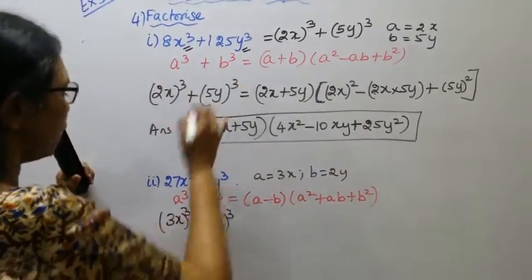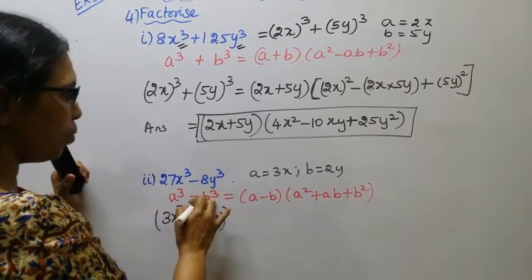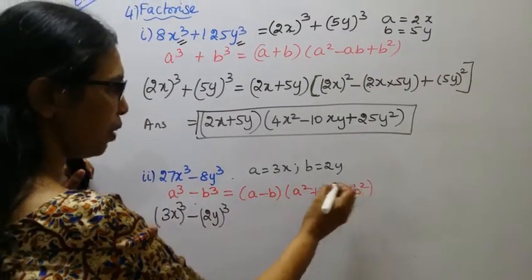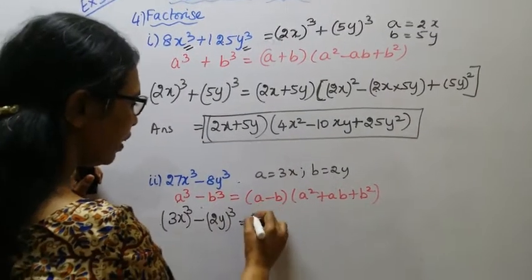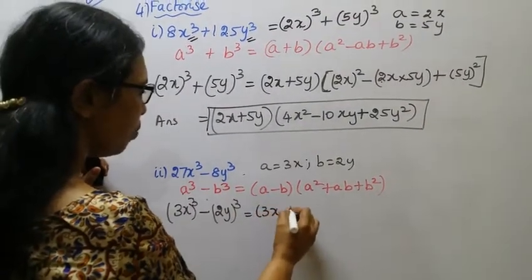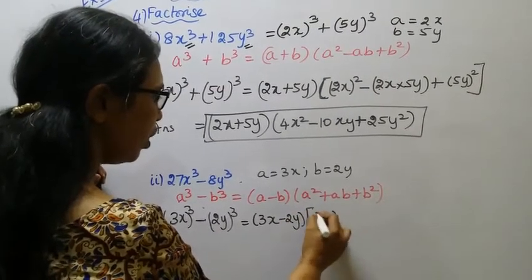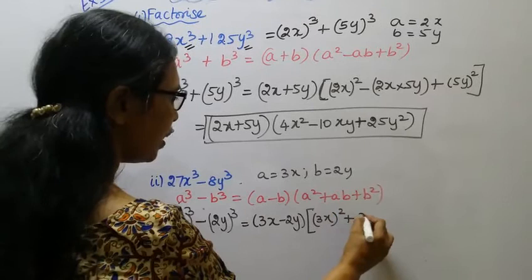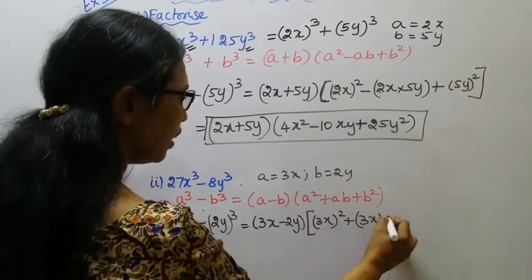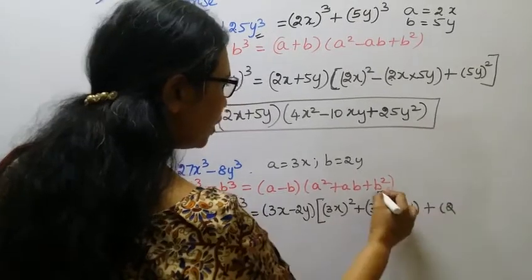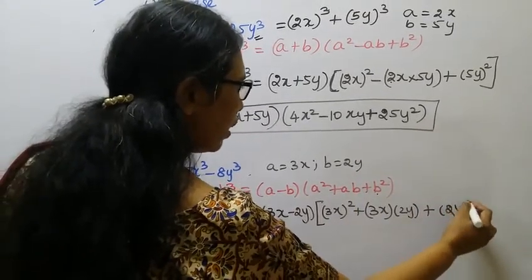It is a³ - b³ = (a-b)(a² + ab + b²). a is 3x minus 2y. a² = (3x)² plus ab = 3x × 2y plus b² = (2y)².